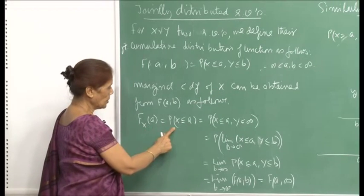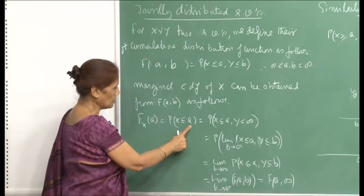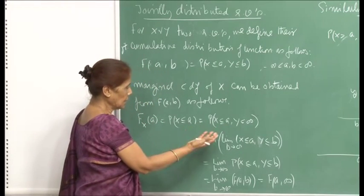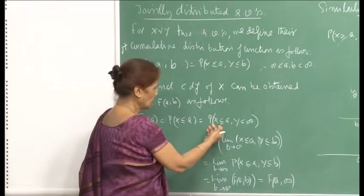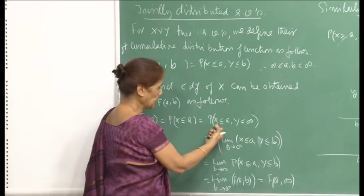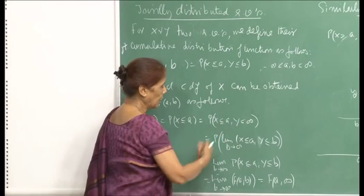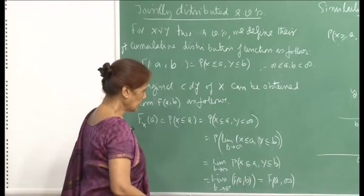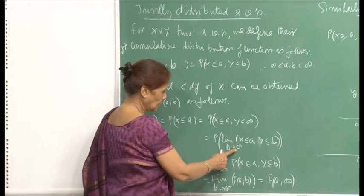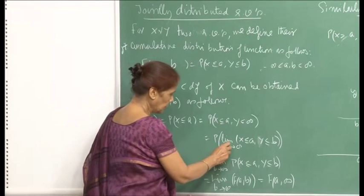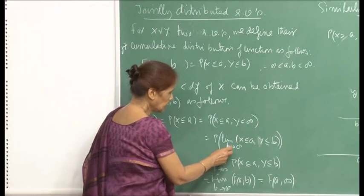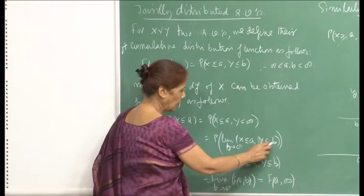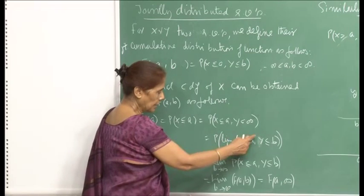This means that Y is allowed to take any possible value. Therefore, we sum over all possible values of Y — that is, probability X ≤ a and Y ≤ b. This is also the same as b going to infinity, meaning we take the limit as b → ∞ of the event X ≤ a, Y ≤ b.